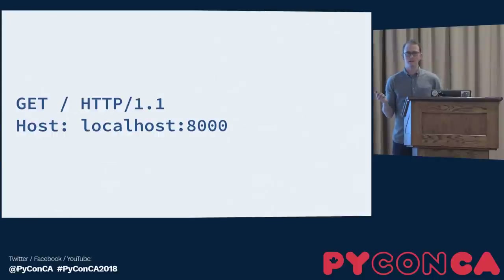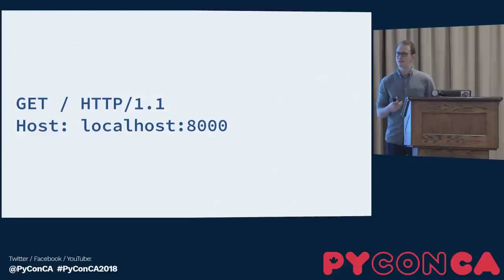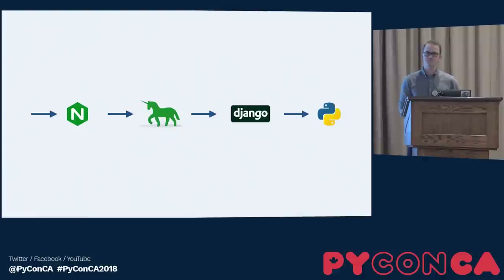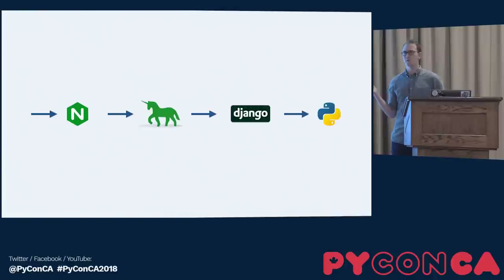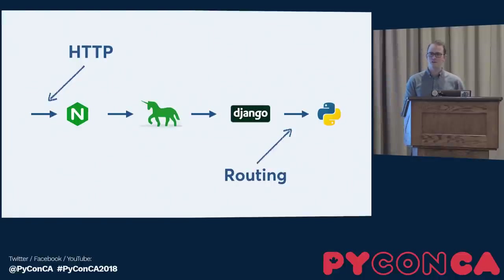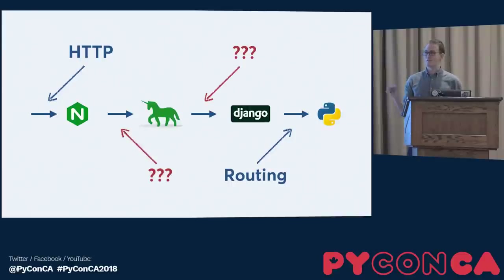HTTP looks like a textual format, but I'm dealing with a fully hydrated Python request object with methods and a bunch of data inside it. When I laid it all out, there's Nginx, Gunicorn, Django, and Python — the stuff on the right is my code, doing what I know well. I know there's HTTP coming into the system, and I know I route through Django because I set up those URL routes. But the rest of it — I had no idea.